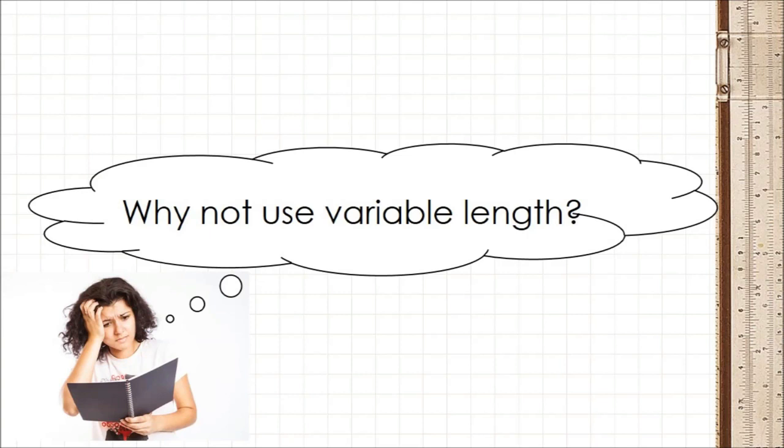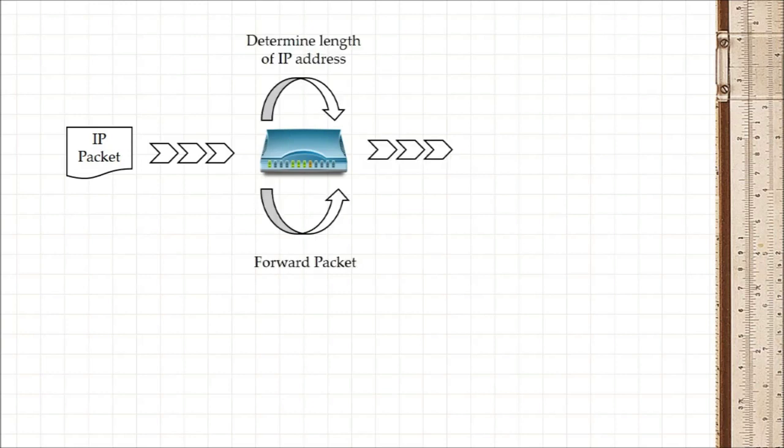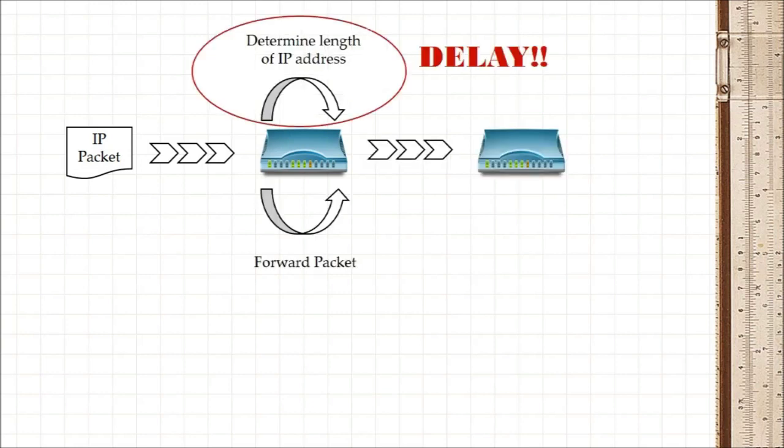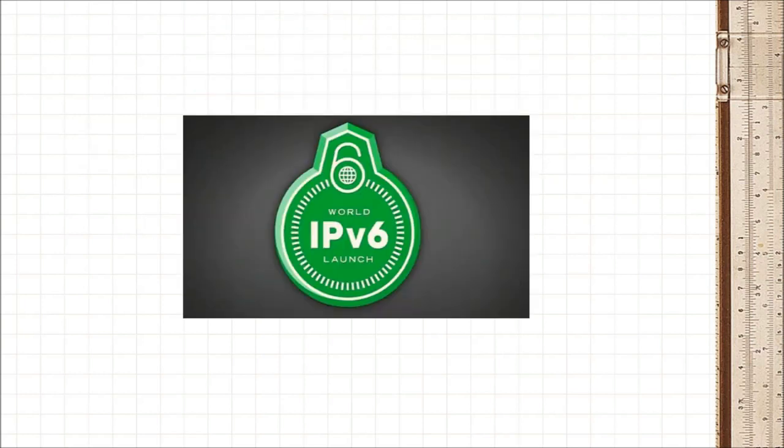Well why didn't engineers just invent a variable length addressing space? Wouldn't that be easier? No. The Internet works on speed and if routers had to spend even a fraction of a second unpacking a packet to find out the IP address, that would slow down the entire Internet. So a fixed length of 128 bits was chosen and out of it was born IPv6.